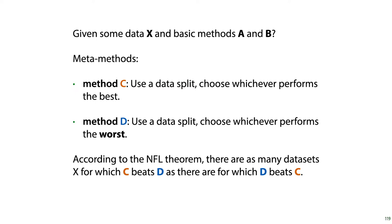Now, according to the no free lunch theorem, there are as many datasets X for which method C is better than method D as there are for which method D is better than method C. Note that intuitively, method D would be an absolutely insane method to choose a model.